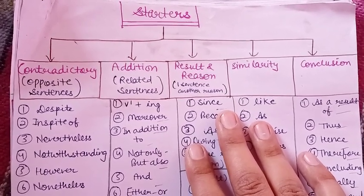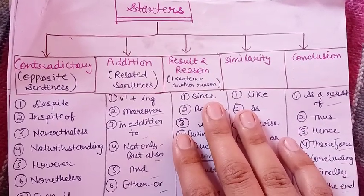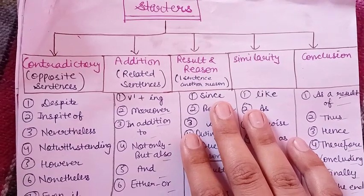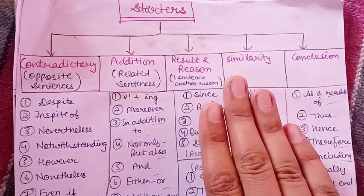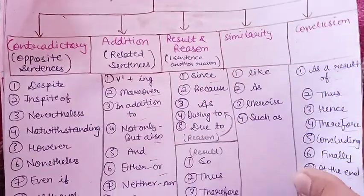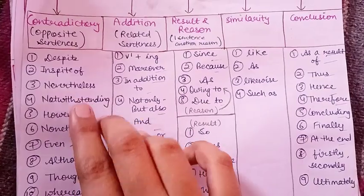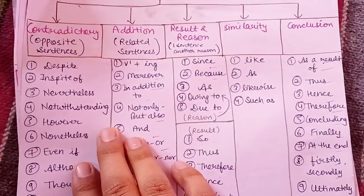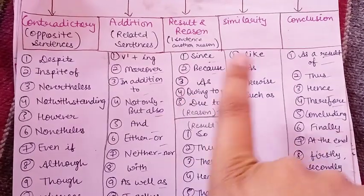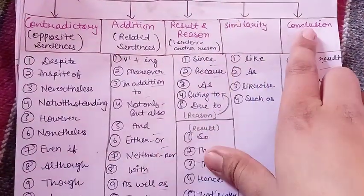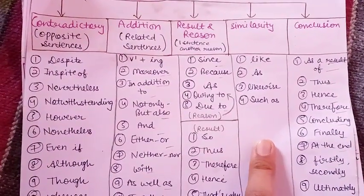First of all, starters is the most confusing topic — I found it the most confusing. So I had made special notes for this topic. As you can see, I have written that in contradictory statements these starters come, and then there are additional sentences, result, and reason. These are the types of sentences and the starters which come in these sentences.